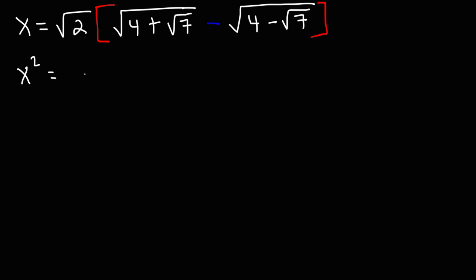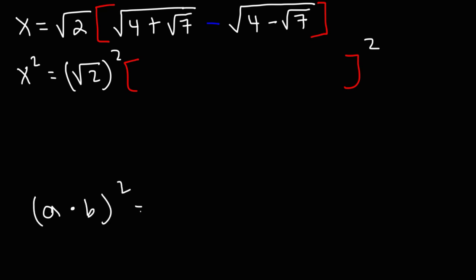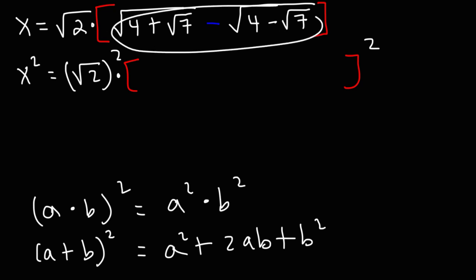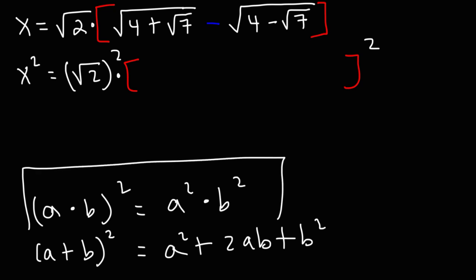So x squared is going to equal the square of the square root of 2, and we're going to square everything on the inside. Keep in mind: if you have an expression a times b and you wish to square it, this becomes a squared times b squared. But if there's a plus or minus between a and b, such as (a + b) squared, this becomes a squared plus 2ab plus b squared — you would need to FOIL it. In this example, the square root of 2 is multiplied by the entire expression, so we use this formula and square those two parts separately.